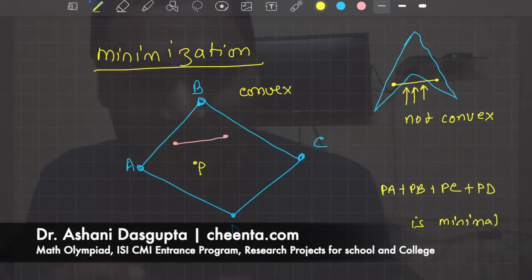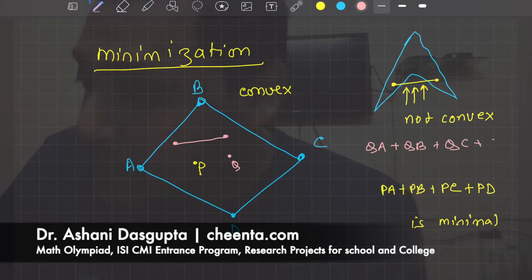What is the meaning of the word minimal? Here is the precise definition. If you take any other point Q and compute QA + QB + QC + QD, then that sum would be greater than or equal to PA + PB + PC + PD. That is the precise meaning of the word minimal—it is as small as you can make it.